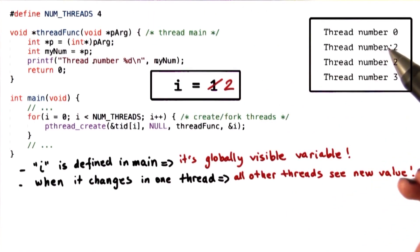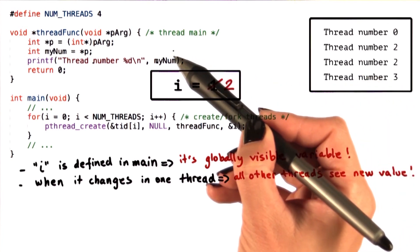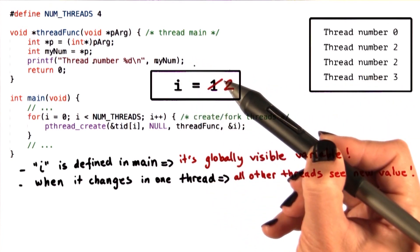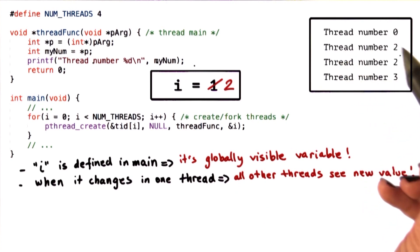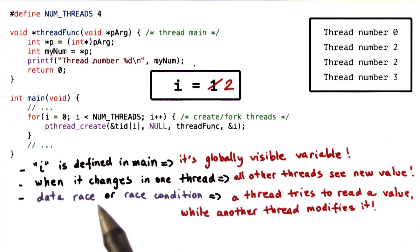It's just that both the second and the third thread ended up seeing that the value of I is 2, and that's why they ended up printing out thread number 2. We call this situation a data race or a race condition.